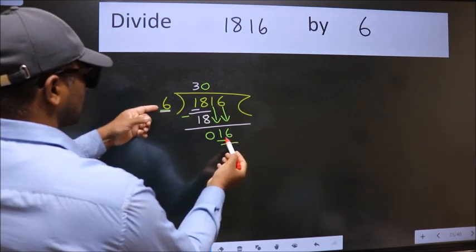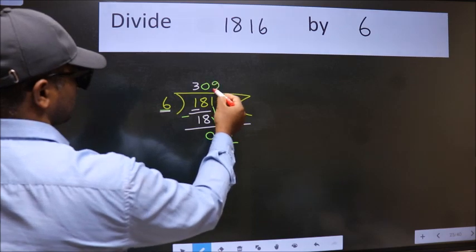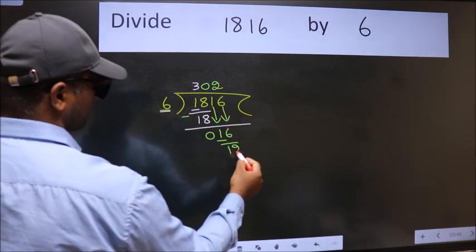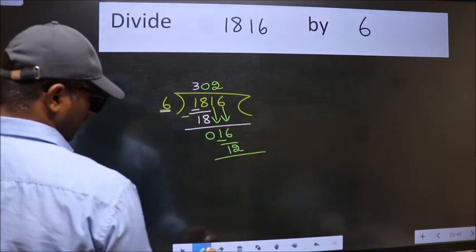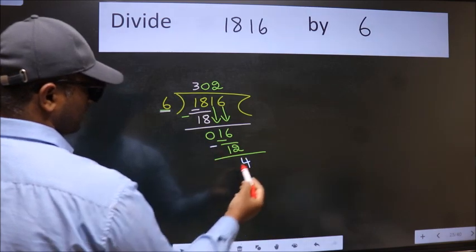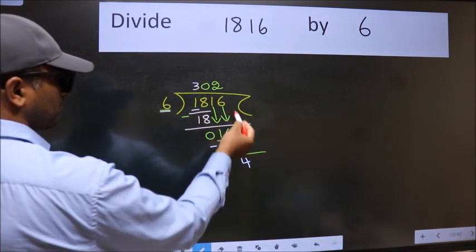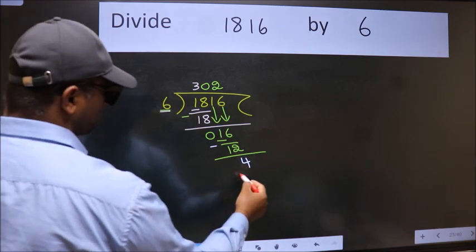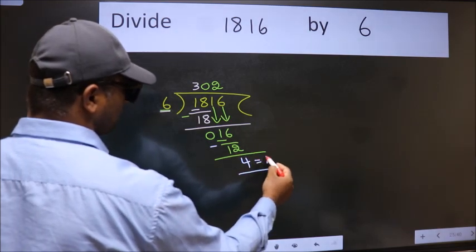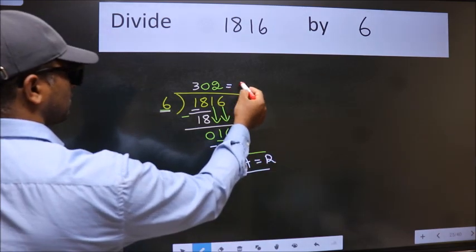A number close to 16 in 6 table is 6 twos 12. Now we subtract. We get 4. No more numbers to bring it down. So we stop here. This is our remainder and this is our quotient.